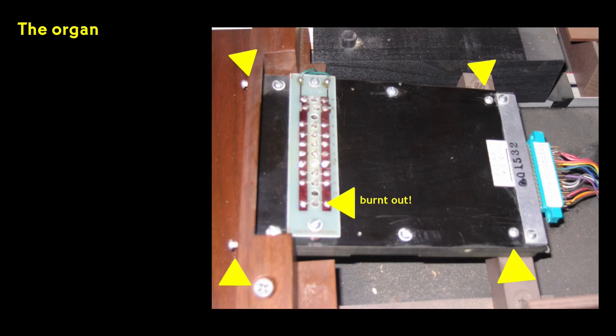The card reader worked by having the card interrupt a series of light beams provided by tiny incandescent lamps, and one of the lamps had burnt out. Another couple burnt out as I was working on it. I decided that having to solder tiny lamps in place was a losing proposition, and I would replace them with LEDs and never think of them again.